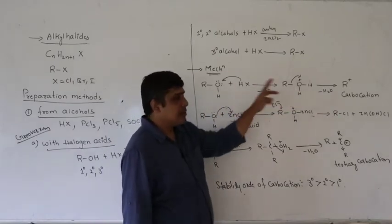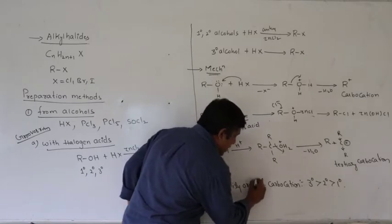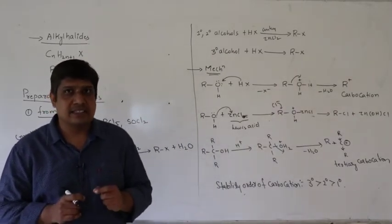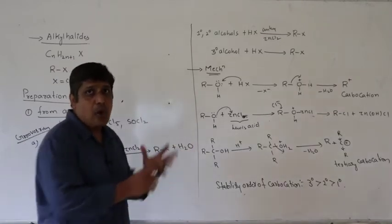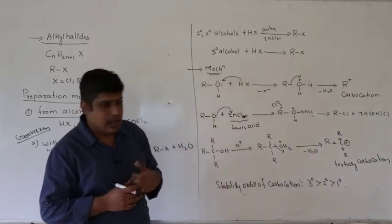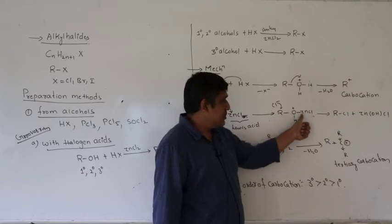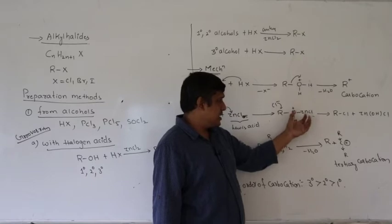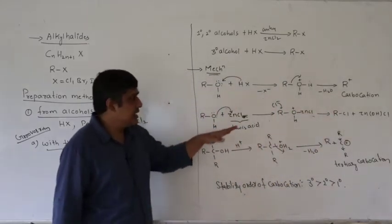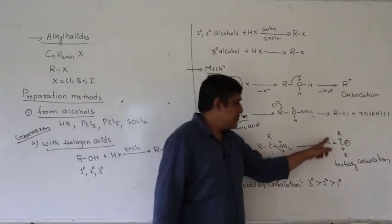If it is a primary alcohol, you get a primary carbocation; secondary gives secondary; tertiary gives tertiary carbocation. The stability order is: tertiary > secondary > primary. Since primary and secondary carbocations are less stable, their ease of formation is less. So you require zinc chloride — a Lewis acid — which accepts the electron pair from oxygen, thereby weakening the carbon-oxygen bond and facilitating the reaction.